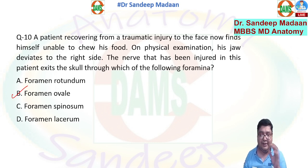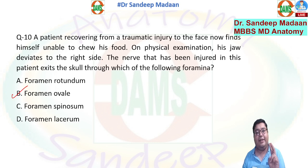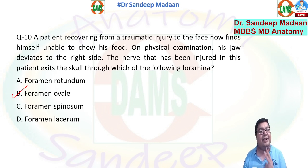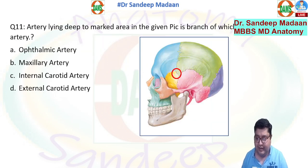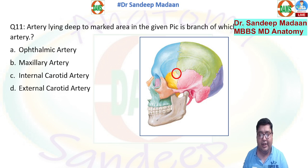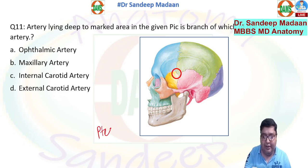To remember the structures passing through the foramen ovale, use the mnemonic MALE: M for mandibular nerve, A for accessory meningeal artery, L for lesser petrosal nerve, and E for emissary vein.